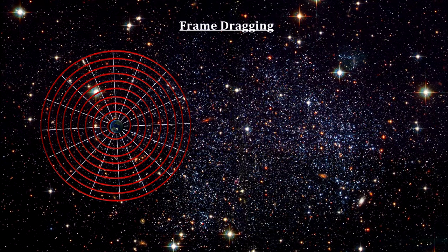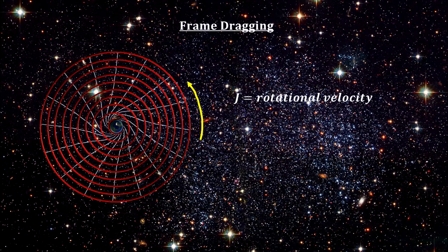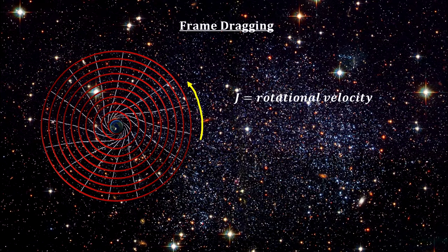The effect was derived in 1918 by physicists Joseph Lenz and Hans Thiering. It is known as the Lenz-Thiering effect. They predicted that the rotation of a massive object would distort the space-time metric, making the orbit of a nearby test particle precess like a gyroscope.